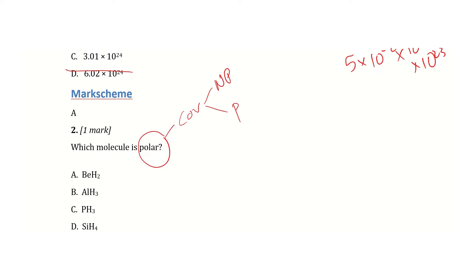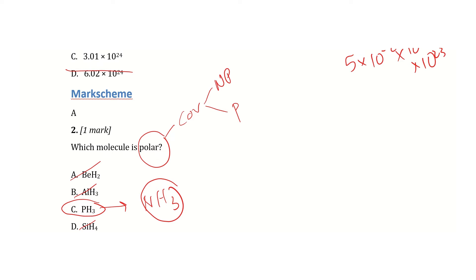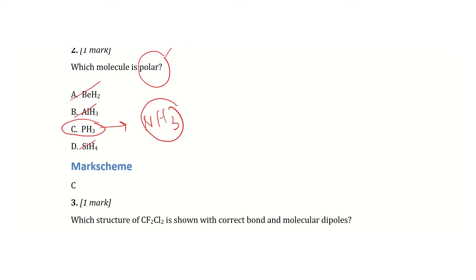Looking at the options — beryllium hydride, aluminium hydride, phosphorus hydride, and silicon hydride — I can eliminate beryllium hydride and aluminium hydride. I can also eliminate silicon hydride because silicon belongs to the same group as carbon, making it equal sharing. This leaves the most correct answer, which is phosphorus hydride. Phosphorus belongs to the same group as nitrogen, just like ammonia, which is a polar molecule. The correct answer is C.